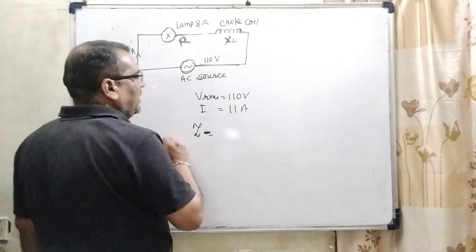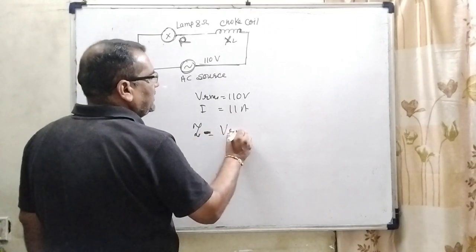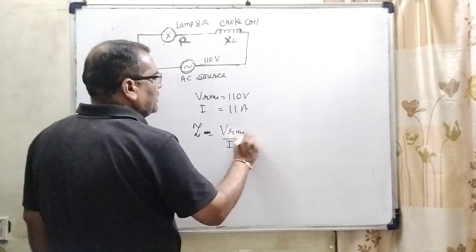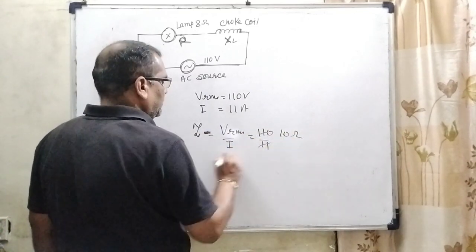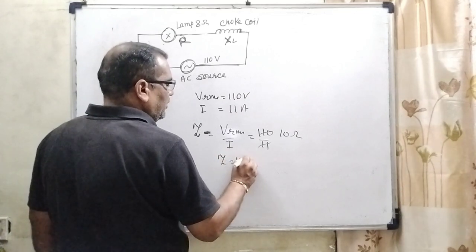Z equal to Vrms divided by I. What is Vrms? That is 110 and 11, we get 10 ohm. That is impedance 10 ohm.